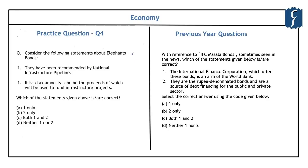The fourth question is related to the elephant bond. A 2016 previous year question was asked about masala bonds: the International Finance Corporation offering these bonds is an arm of the World Bank — correct; and they are rupee-denominated bonds and a source of debt financing for public and private sector — also correct. Hence the answer is C, both 1 and 2.